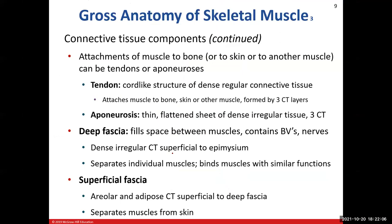There are other connective tissue types involved in skeletal muscle. Tendons attach muscle to bone — they're cord-like structures made of dense regular connective tissue, and they attach muscle primarily to bone but also to skin or another muscle. The tendon is made up of those same three connective tissue layers. A flat tendon is called an aponeurosis — a thin, flattened sheet of dense connective tissue also made up of those three connective tissue layers.